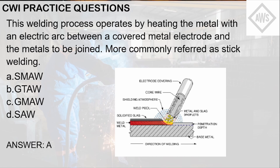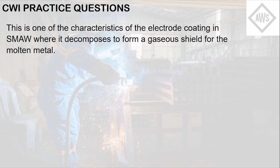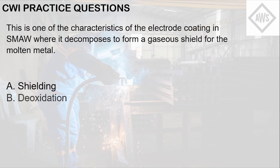Next question: this is one of the characteristics of the electrode coating in SMAW where it decomposes to form a gaseous shield for the molten metal. Letter A: shielding. Letter B: deoxidation. Letter C: alloying. Letter D: insulating. Deoxidation is the characteristic of the electrode that removes impurities from the molten metal.